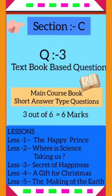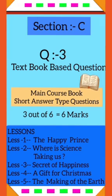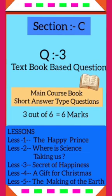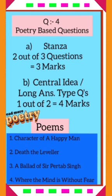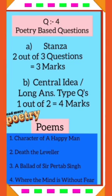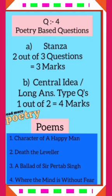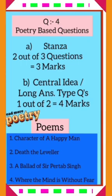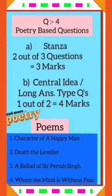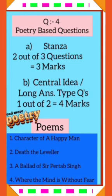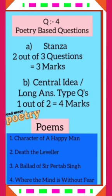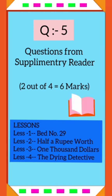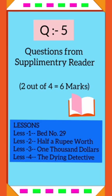Section C: Question 3 will contain short answer type questions from the lessons of the main course book of 6 marks. Question 4 will be poetry-based questions. In Part A, questions will be from the given stanza of the poem of 3 marks. In Part B, you will have 2 questions out of which one has to be done — it will contain the central idea and long answer type question from the poetry section of 4 marks. Question 5 will have questions from supplementary reader lessons of 6 marks.